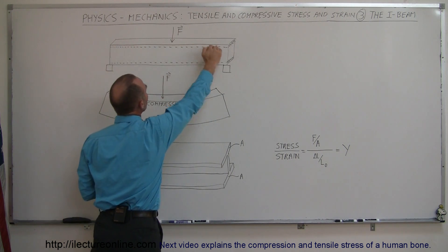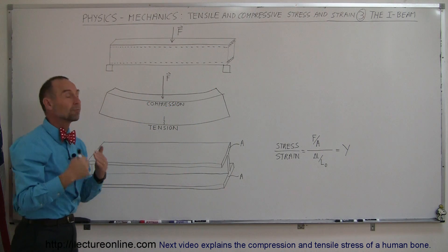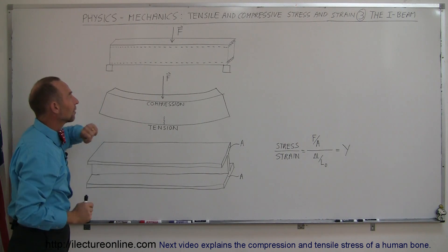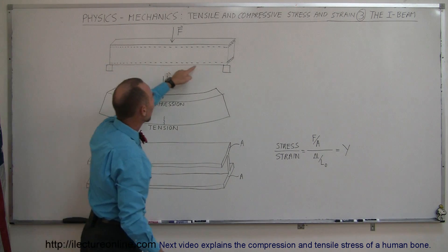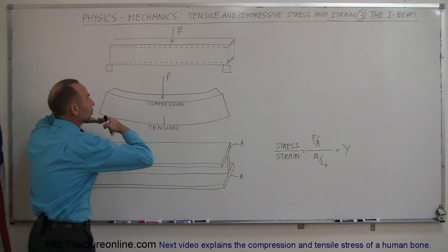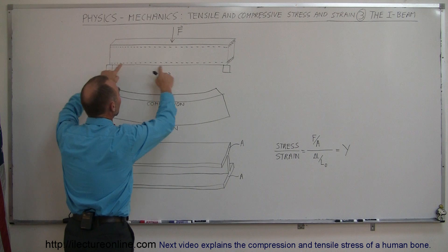It's this portion of the beam that's going to be under the most compression, with the most force applied pushing the molecules together. The bottom end of the beam is going to be under the most tension. Because of the sag, the molecules are pulled apart the most at the very bottom of the beam.